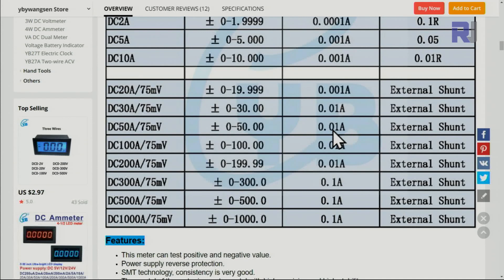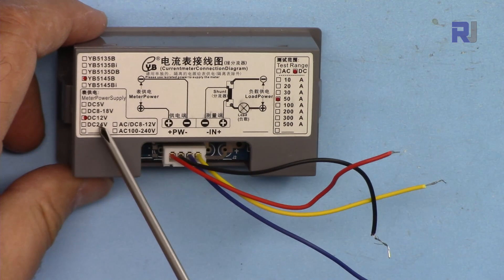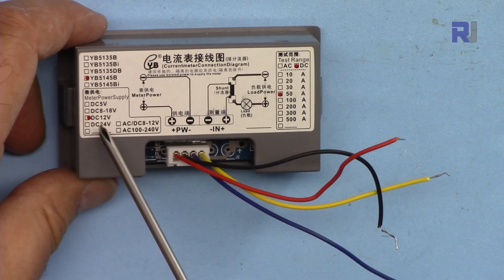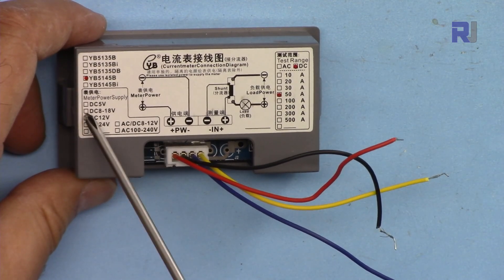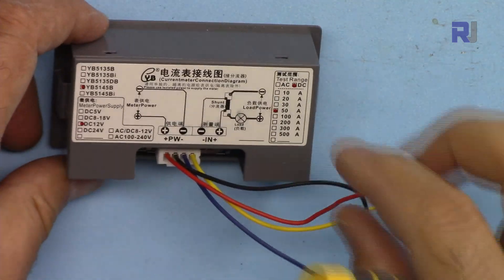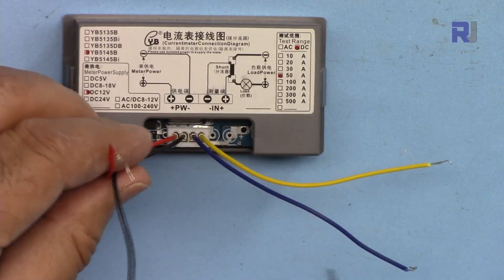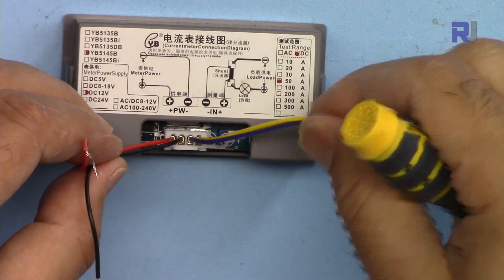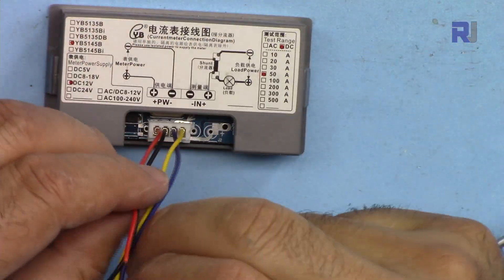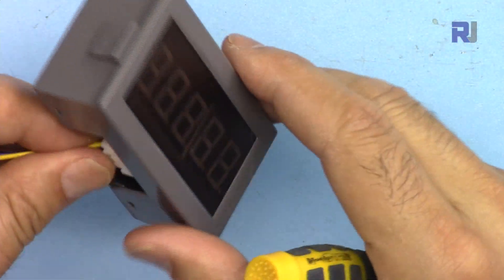50 ampere 75 millivolts plus minus. It can go plus minus 50 which means you can reverse the polarity and it shows minus 50. The resolution is 0.01 ampere or 10 milliampere. The sensor is external shunt module as labeled here for 12 volts. The same module can be modified for different versions. The wiring is clearly explained. We have two wires that will be connected to power supply, these two wires will go to the 75 millivolts shunt, and there is no other setting.